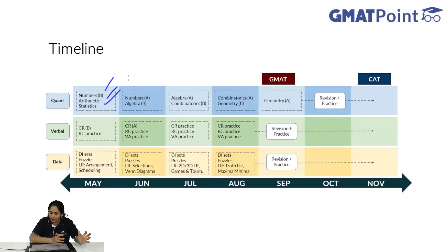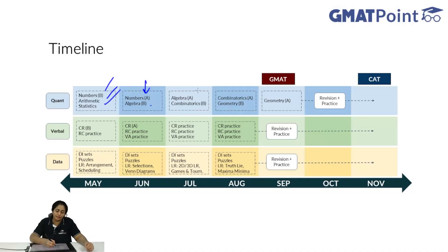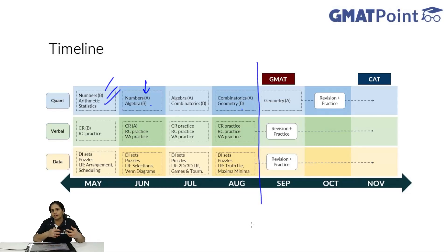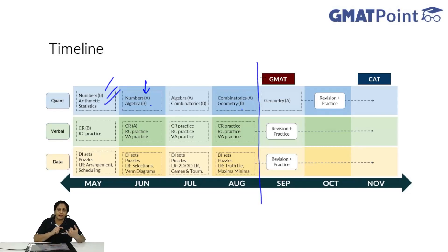The basics of number systems are needed first; the advanced part of number systems you can do later along with algebra. Do the basics of algebra with the advanced parts of number systems, then continue with advanced algebra and then start with combinatorics. Once you finish combinatorics, then finally you can start with geometry. Geometry is kept for last because at this point — August and September — you can take the GMAT exam. If you have only basic understanding of geometry till then, that is fine because geometry does not actually come on the GMAT exam. Once your GMAT exam is done, you can start working on geometry, harder questions from arithmetic, harder questions from algebra, combinatorics, number systems — all of that you can then focus on from September onwards.